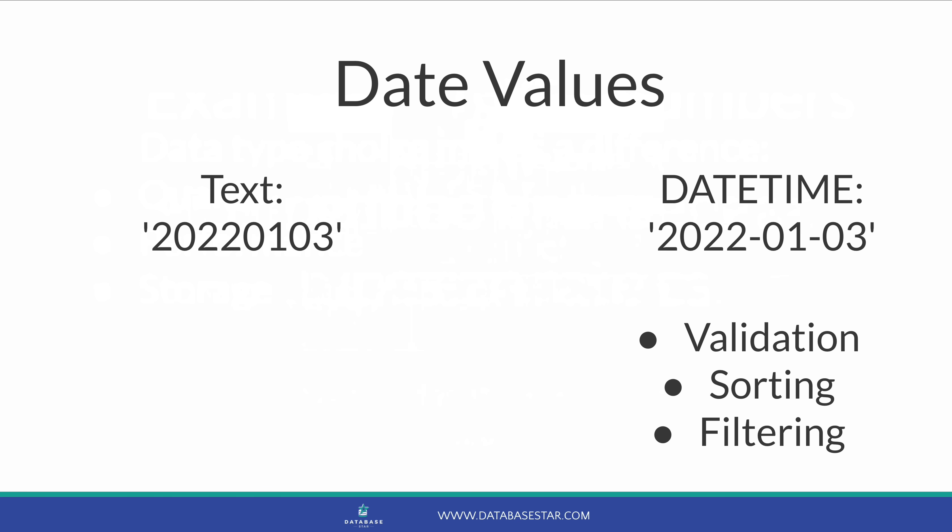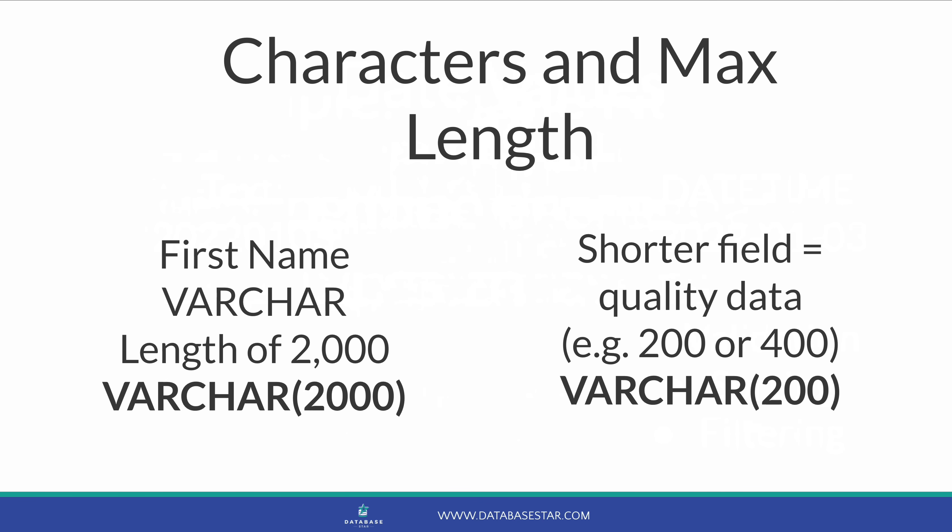For example, date values could be stored as numbers or text, but it's better to choose a valid date data type like datetime. This ensures only valid dates can be stored, that dates can be sorted and filtered correctly, and uses the database's built-in optimizations. For character types, you often need to specify a maximum length — you could store a first name in a varchar field of 2000 characters, but a limit of 200 or 400 may be more suitable and can introduce better quality data.